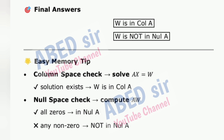Easy memory tip: Column Space — solve AX = W; if a solution exists, W is in Kernel(A). Null Space — compute AW; if all entries are 0, W is in Null(A); any non-zero result means W is not in Null(A).